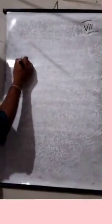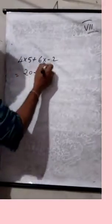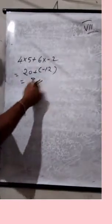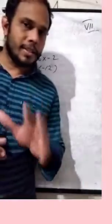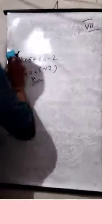Mohan gets 4 correct and 6 incorrect answers. What is his score? 4 into 5 equals 20, plus 6 into minus 2 equals minus 12, so 20 minus 12 equals 8 marks. Reshma gets 5 correct and 5 incorrect answers — you should do that as homework. That is the 7th problem on page 21.